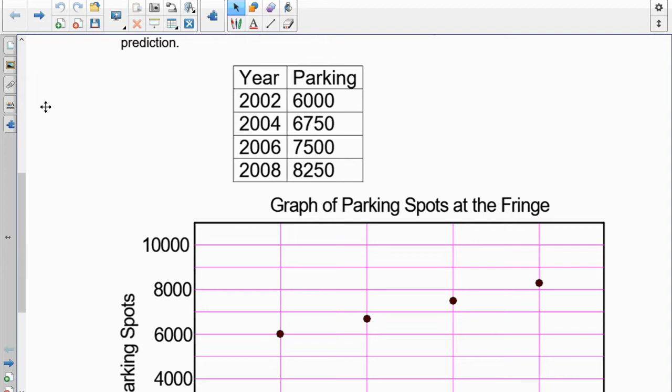In 2002, they had 6,000 parking spaces that were used for the Fringe. In 2004, there were 6,750. In 2006, there was 7,500. And in 2008, they used 8,250.